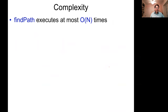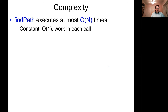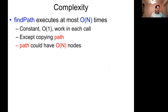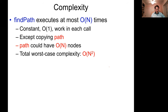Find-path executes at most order N times because of the visited flag, and there's constant work in each call except copying the path. A simple bound: the path can't have more than N nodes in the city. So if the path is order N, and there are N calls each copying a path of N nodes, that's order N squared. That's going to be really slow when N is 100,000 or a million.